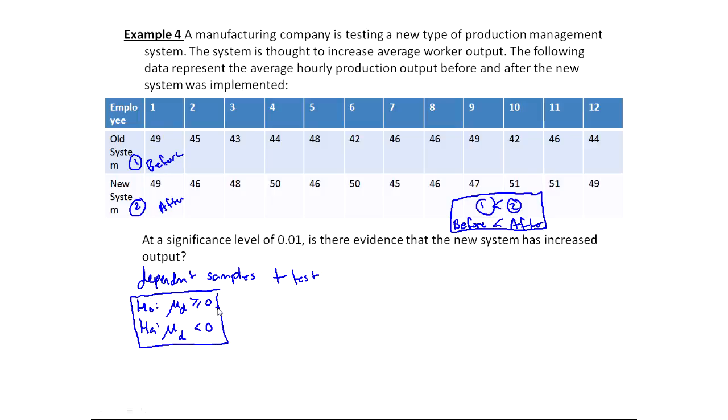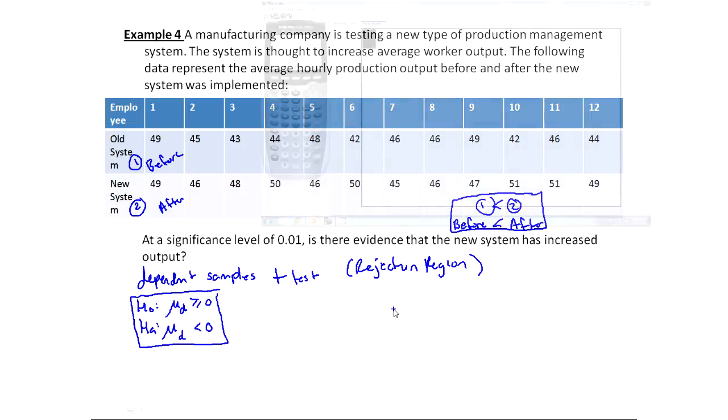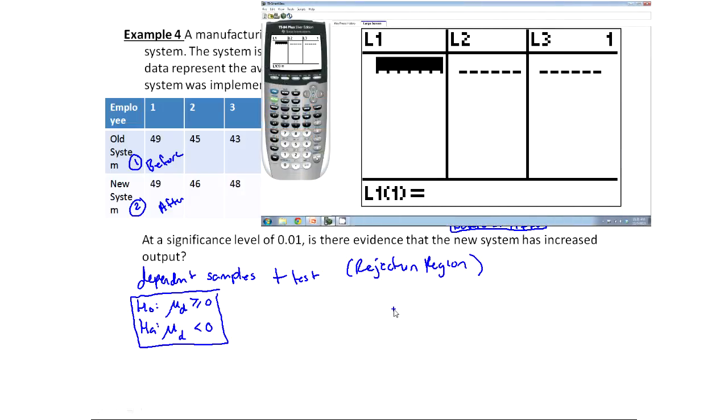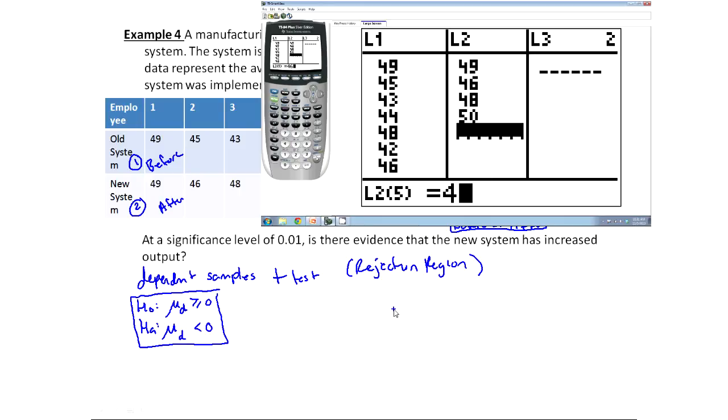We'll approach this using the rejection region method. I'm still going to calculate my test statistic, but I'm going to use the calculator to help. That's really important with this type of problem. You don't want to be doing these calculations by hand. I need to get all the differences together. I'm going to go into stat and edit. I'm going to type all of group one into list one, so 49, 45, etc. The order doesn't matter, but once I pick an order, I got to stick with it because these are paired up. Then I'll take all of group two and put it into list two. Order matters because these are paired up. We don't want to mix up employee two with employee one.